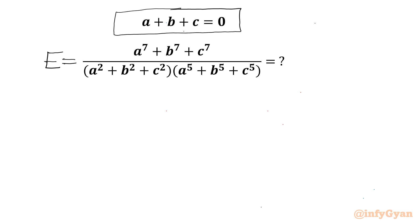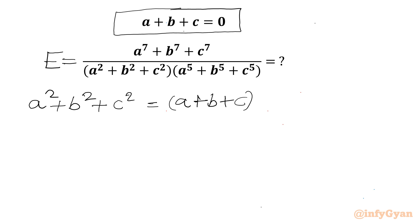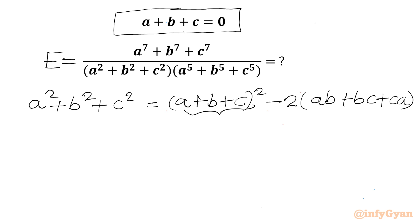I will begin with one identity: A squared plus B squared plus C squared is equal to A plus B plus C whole squared minus 2 times AB plus BC plus CA. Because A plus B plus C equals 0, this becomes minus 2 times AB plus BC plus CA.